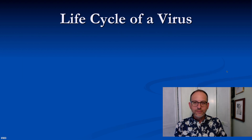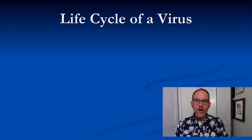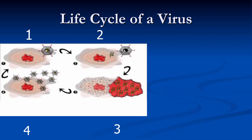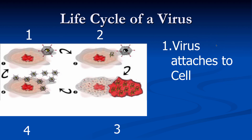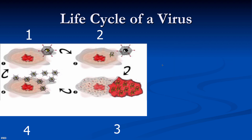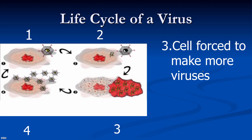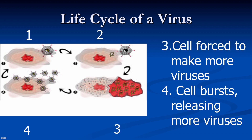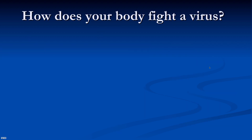Let's look at what viruses do and how they attack us. First, a virus attaches onto a cell. Next, the virus injects DNA into the cell — DNA is the instruction booklet for all living things, so now it gives the cell new instructions. The cell is then forced to make more viruses, and lastly the cell blows up, releasing more viruses. It's killing your cells and making more viruses at the same time.